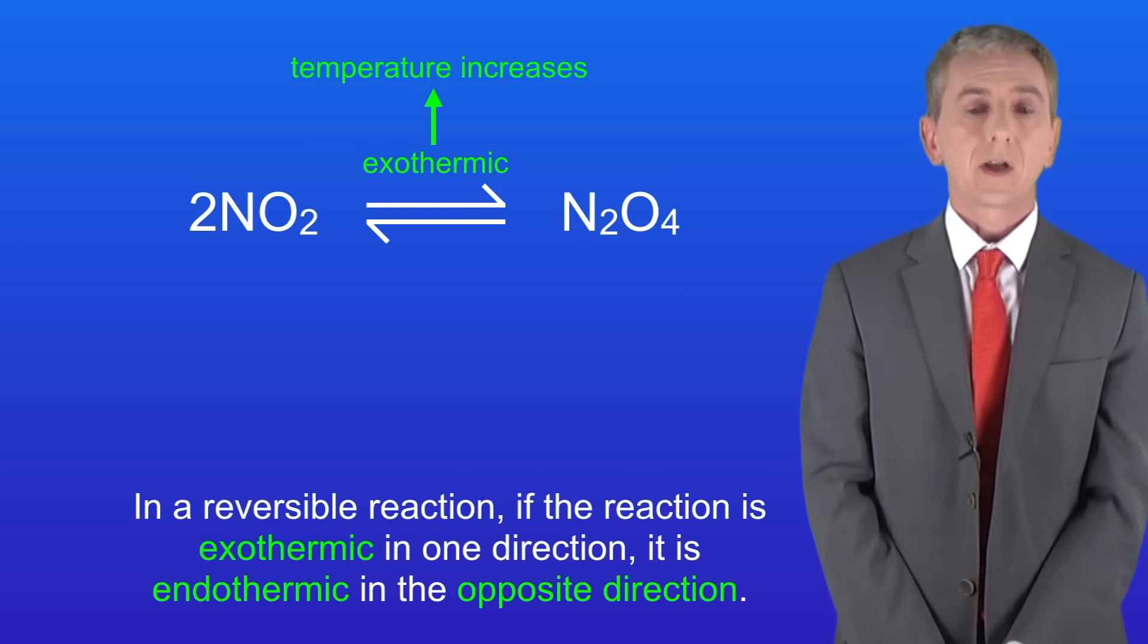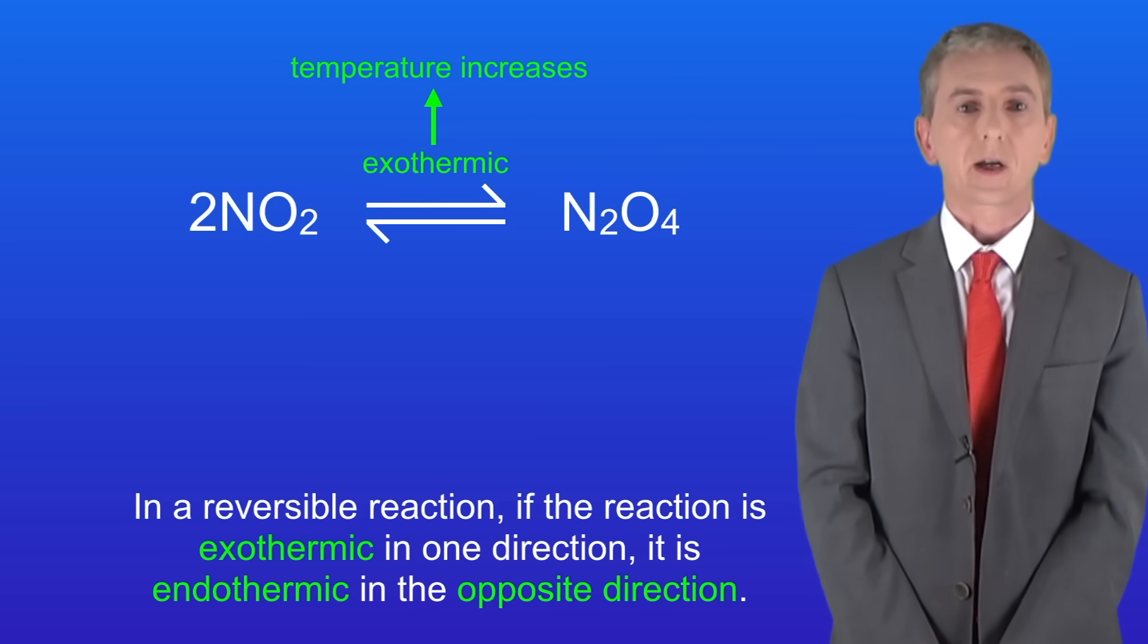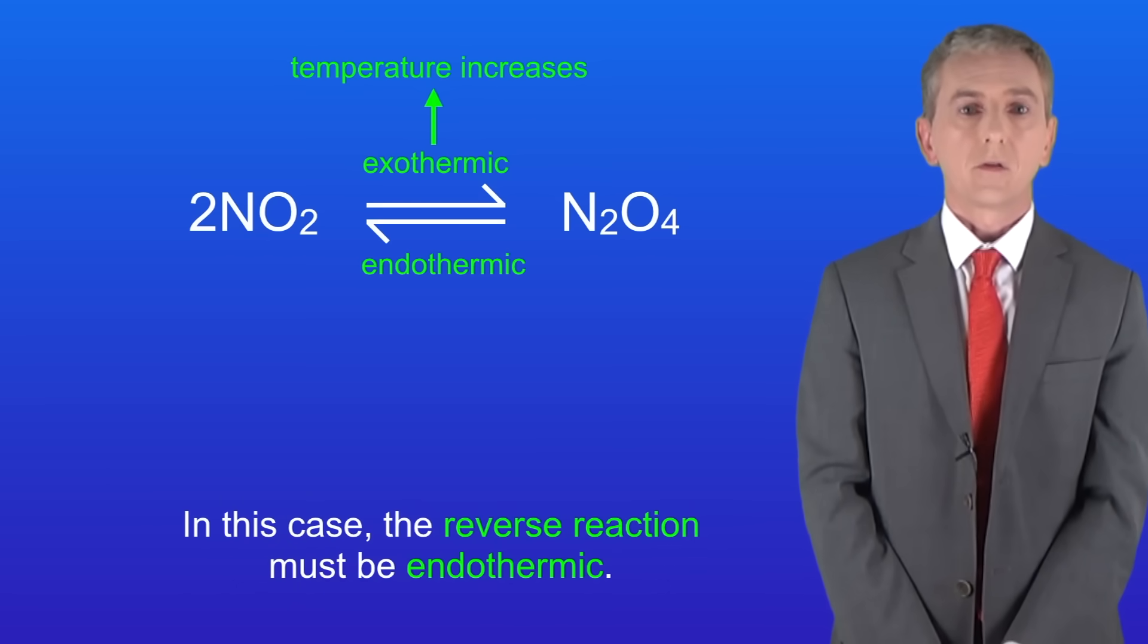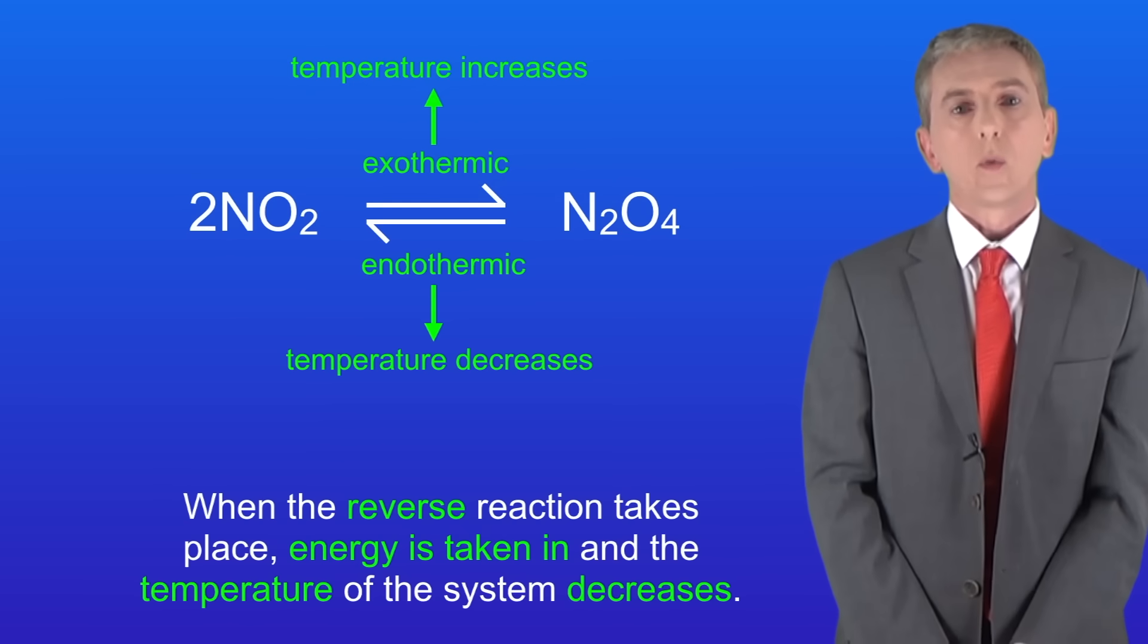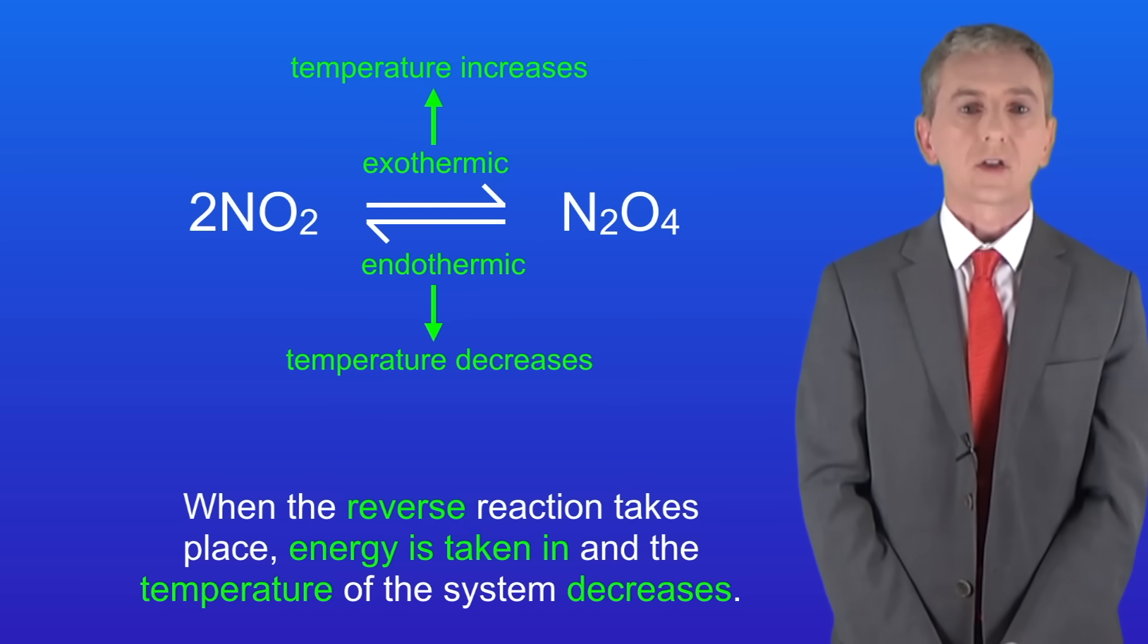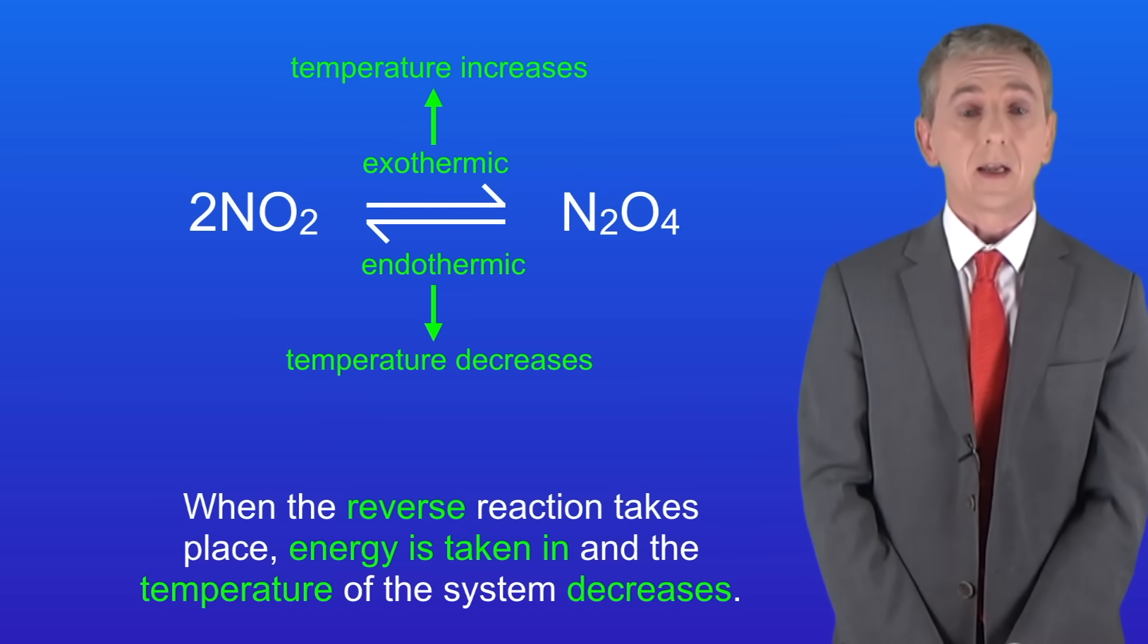Remember that in a reversible reaction, if the reaction is exothermic in one direction, then it's endothermic in the opposite direction. So in this case, the reverse reaction must be endothermic. What that means is that when the reverse reaction takes place, energy is taken in and the temperature of the system decreases.